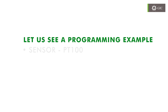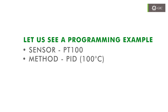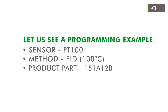The temperature sensor used would be a PT100. The control method will be PID for a heating application to 100 degrees Celsius. The product part number is 151A12B — a single acting PID temperature controller with 2 relay and 1 SSR.